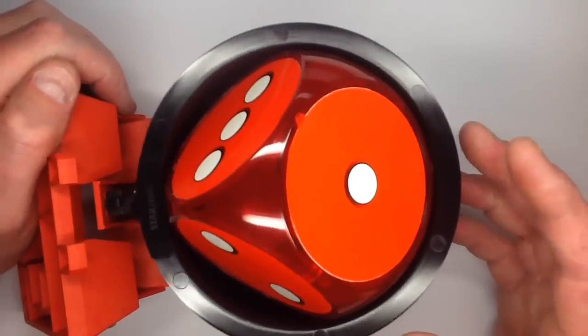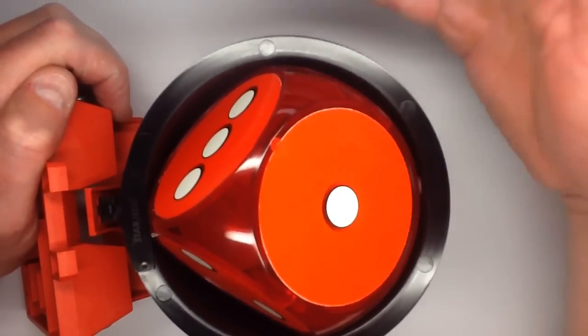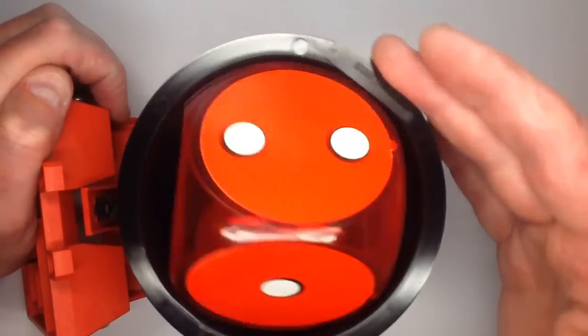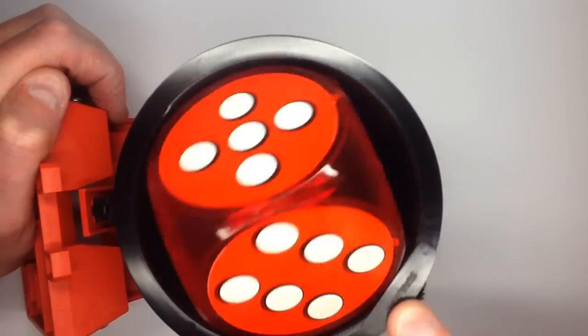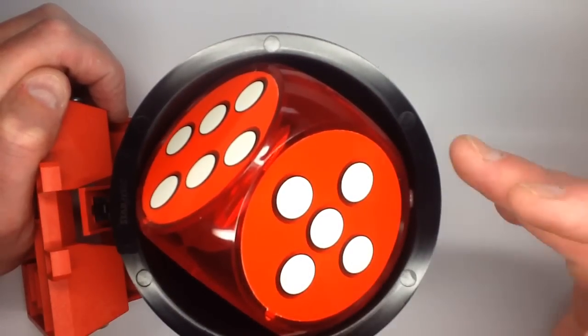indicating a one. And if I turn this round exactly one half turn, it's then displaying a three. And another half turn, it's displaying a five.